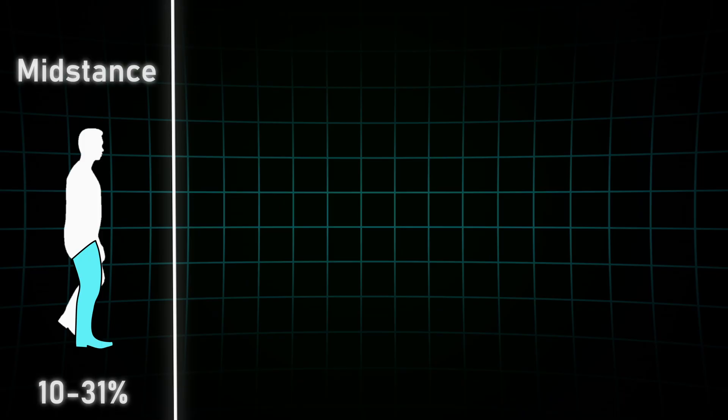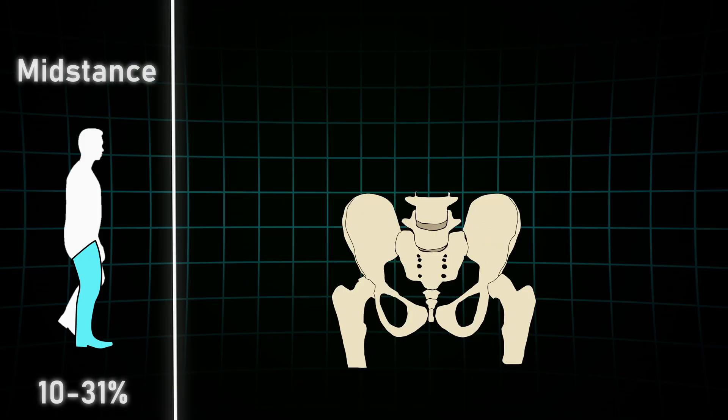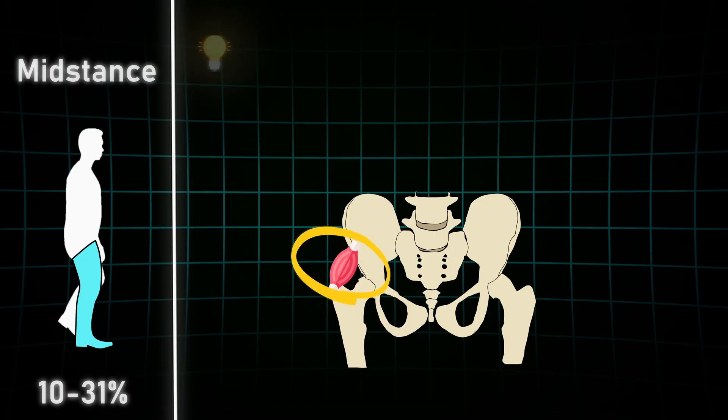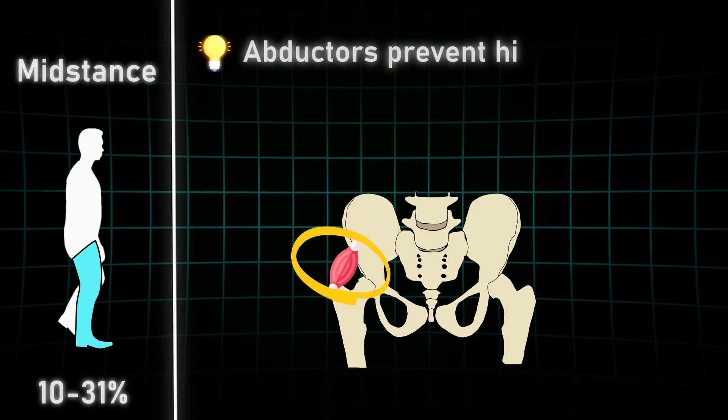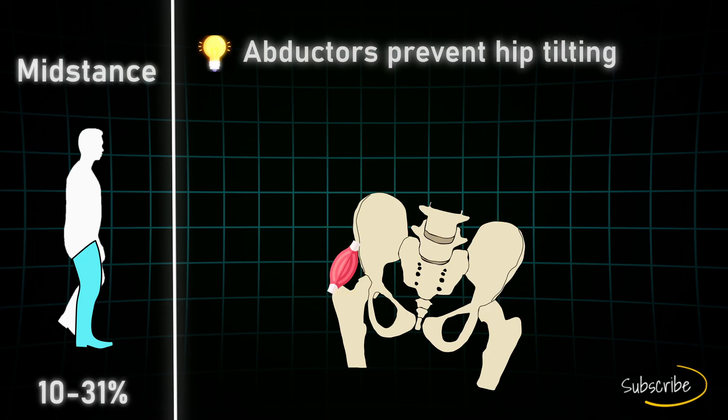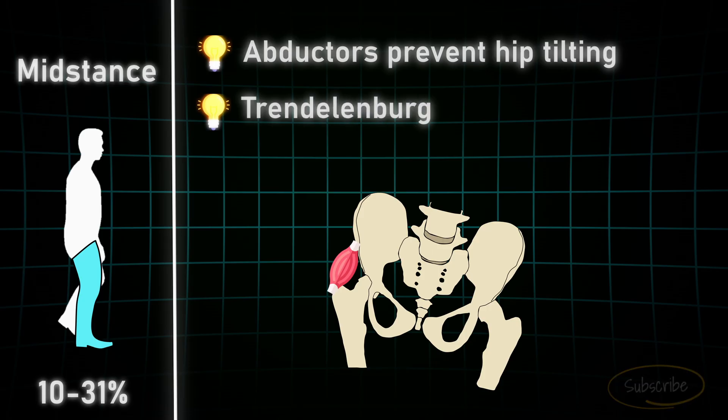Another very interesting phenomenon can be watched from the frontal perspective. Due to the fact that the body weight is only supported by one leg, the hip abductors have to put in some serious work now in order to prevent the pelvis from tilting to the contralateral side. And if it does, this is called a Trendelenburg sign, and this is a hint for insufficient hip abductors.